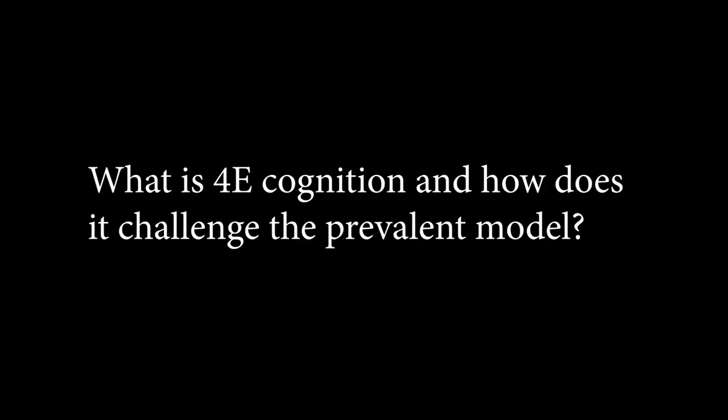4E cognition, which stands for embodied, embedded, enactive, and extended cognition — the main message is that cognition is not just in the head. It's something that involves the body in general and also the situation of the body in the environment. The unit of explanation is not just neuronal processes in the brain, but the whole complex of brain-body-environment taken as a whole or as a gestalt, where there are dynamical relations among those different elements.